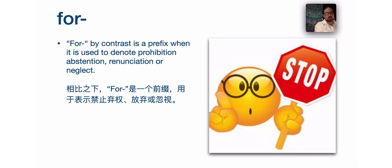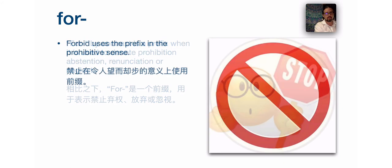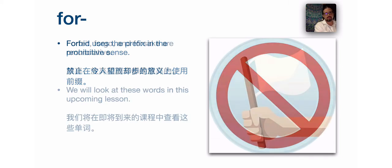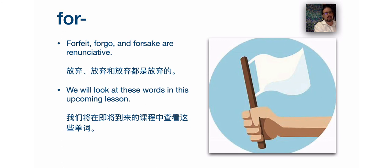Now 'for,' by contrast, is a prefix. When it is used, it is used to denote prohibition, abstention, and renunciation or neglect — so it's kind of a negative prefix. Forbid uses the prefix in the prohibitive sense. Forfeit, forego, and forsake are renunciative. And we will look at these words in this upcoming lesson.